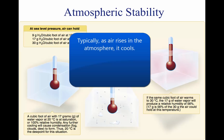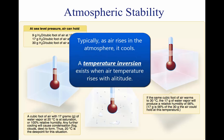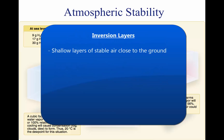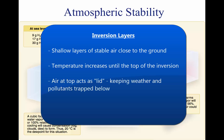As air rises and expands in the atmosphere, the temperature decreases. There is an atmospheric anomaly that can occur, however, that changes this typical pattern of atmospheric behavior. When the temperature of the air rises with altitude, a temperature inversion exists. Inversion layers are commonly shallow layers of smooth, stable air close to the ground. The temperature of the air increases with altitude to a certain point, which is the top of the inversion.